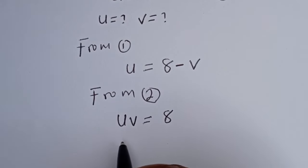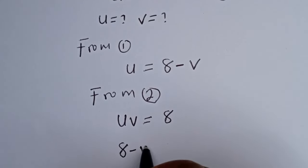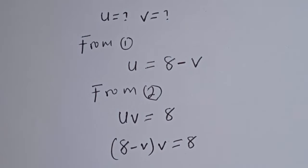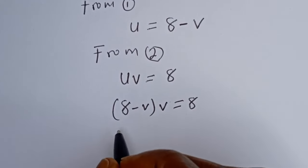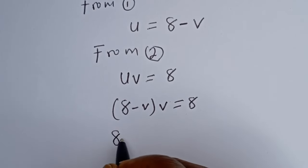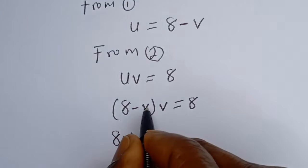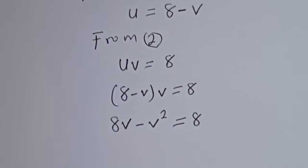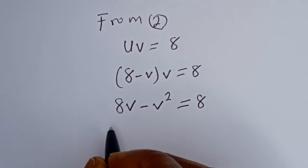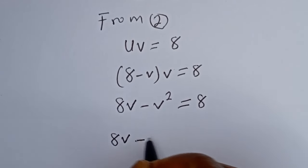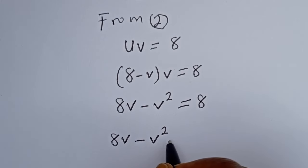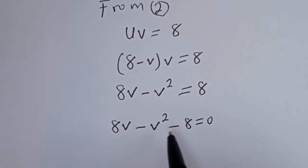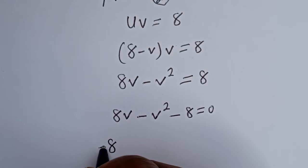We have uv equal to 8. When u is equal to 8 minus v, we have (8 minus v) times v is equal to 8. Opening the bracket: 8v minus v squared is equal to 8. Bringing the 8 to the other side gives us minus 8v plus v squared plus 8 equal to 0.